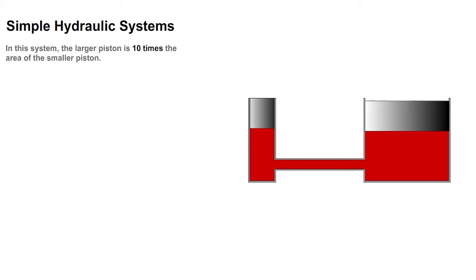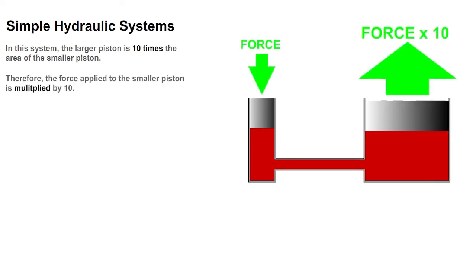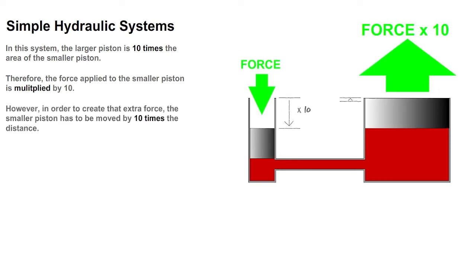In this system, the larger piston is 10 times the area of the smaller piston. Therefore, the force applied to the smaller piston is multiplied by 10. However, in order to create that extra force, the smaller piston has to be moved by 10 times the distance.